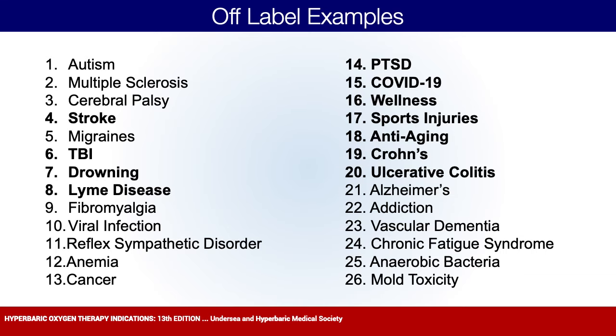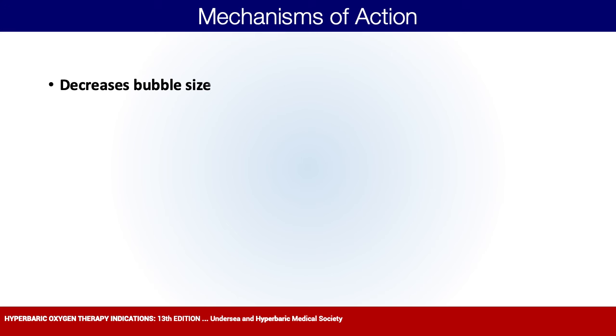These mechanisms are what we use to determine whether hyperbaric is appropriate for off-label conditions, or for the over 100 internationally recognized indications, or even for performance and recovery in healthy people. The first mechanism is decreasing bubble size, which mainly relates back to decompression sickness and the bends. For the majority of cases we'll talk about, decrease in bubble size is not that critical, but it was the first reason hyperbaric oxygen was used for decompression sickness.